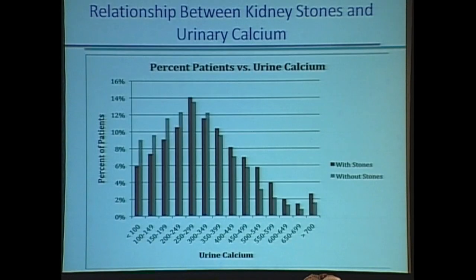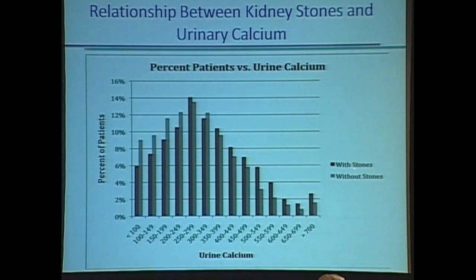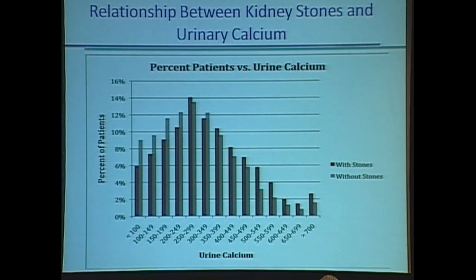This is the relationship between kidney stones and urinary calcium levels. The NIH criteria suggest high urinary calcium is associated with kidney stones — but that's not true. With stones, the dark bar; without stones, the lighter bar. They follow the same bell-shaped curve. The only difference is the people without stones are displaced to the left a little, while the people with stones are displaced to the right a little — they're the same graph, just moved over a bit.